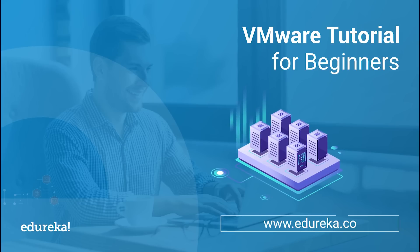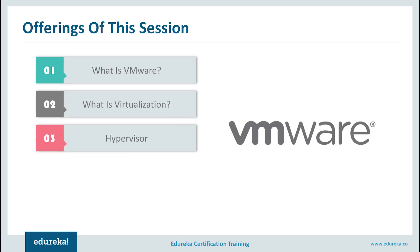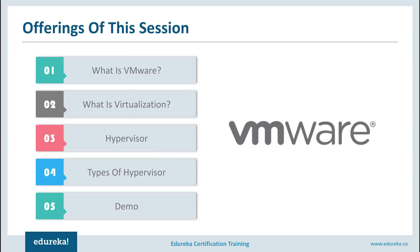Let's start by taking a look at today's agenda. First and foremost, I would be talking about what VMware exactly is, then I would discuss virtualization which is very core to VMware — what virtualization is, why it is needed, and what are its types. Then I would also talk about hypervisor and its types. Finally, I would finish with a demo part.